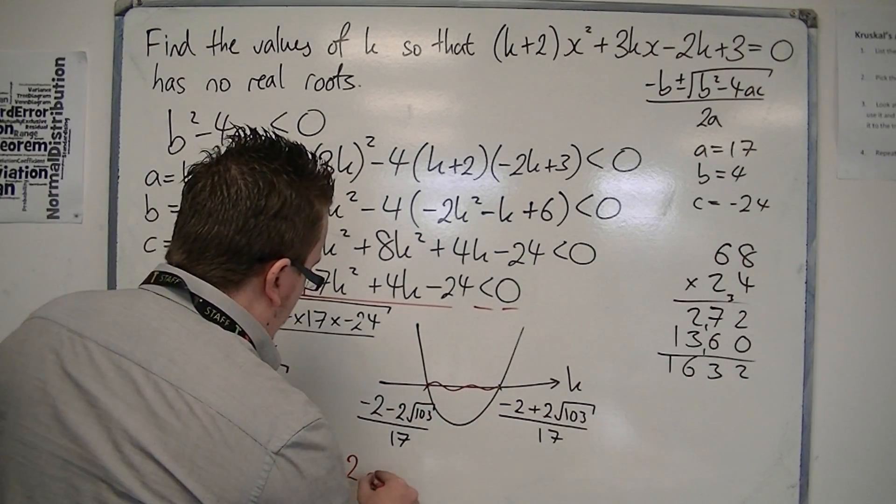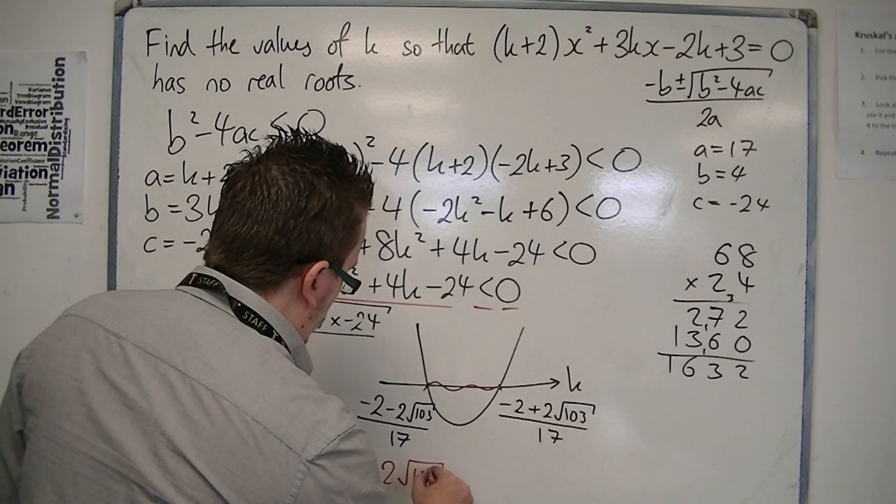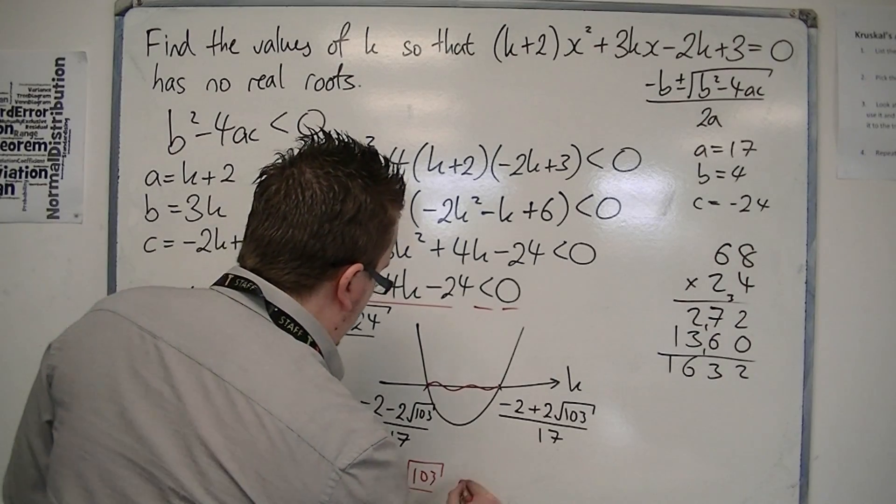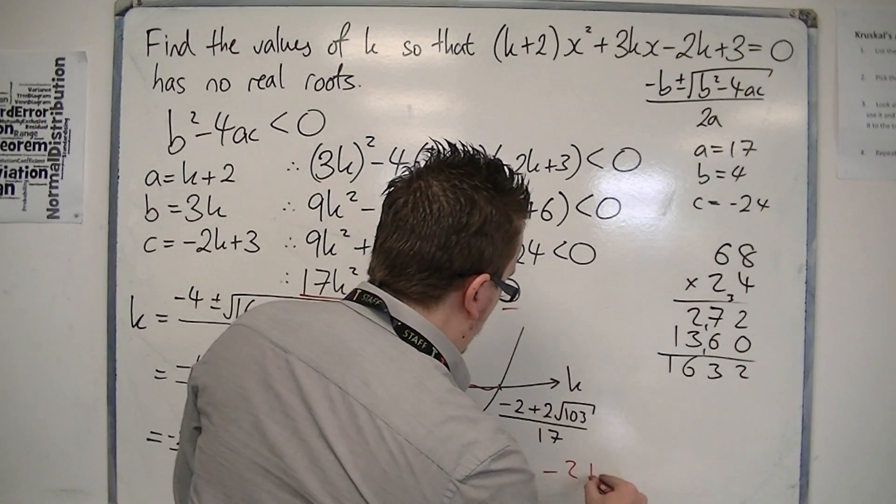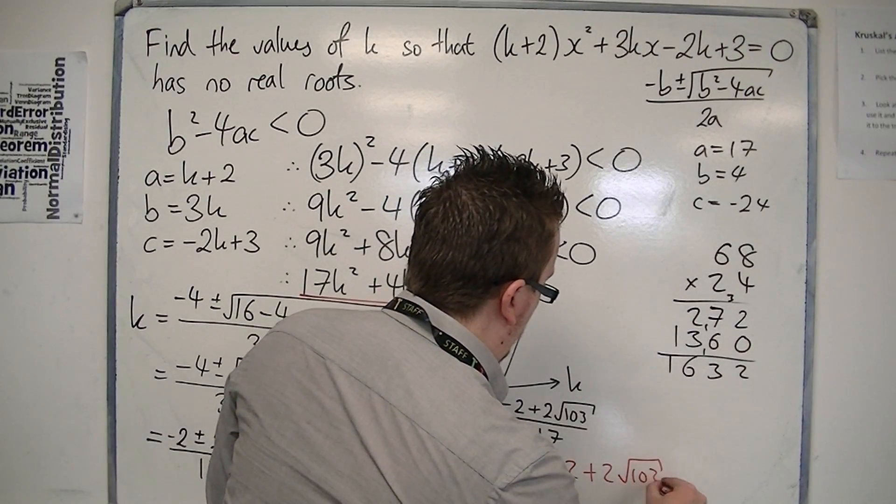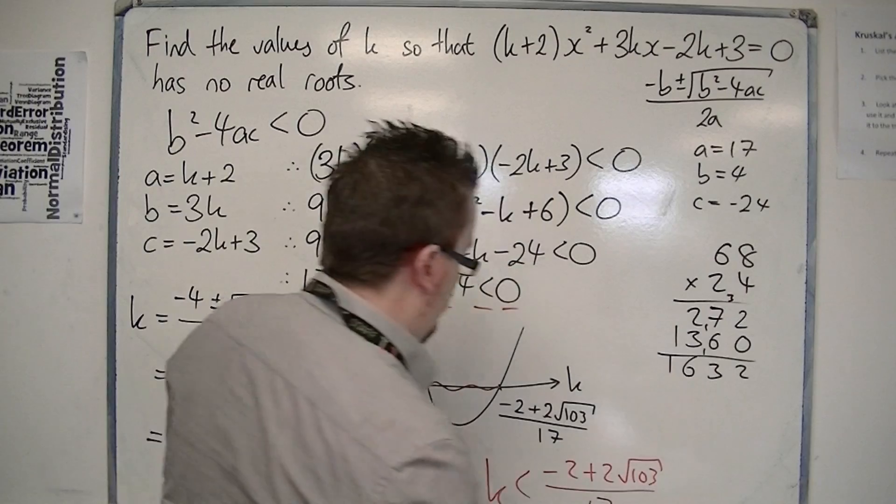So we have (-2 - 2√103)/17 is less than k is less than (-2 + 2√103)/17.